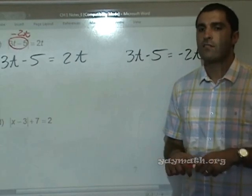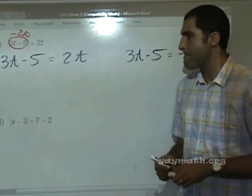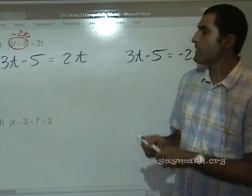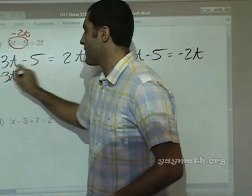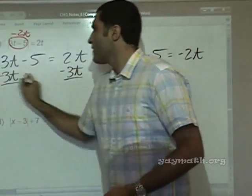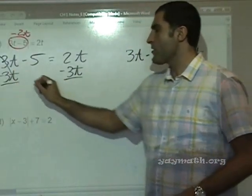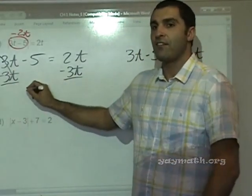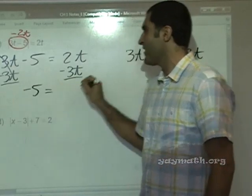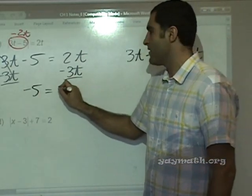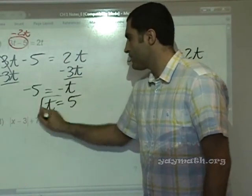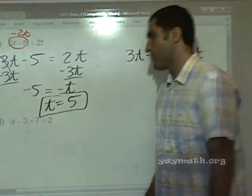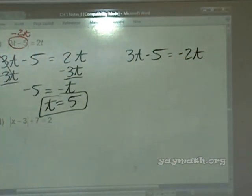Student asks: if 3t goes into 2t, wouldn't t just equal 5? Yes, you're solving now. Isolate the t's on one side: 2t minus 3t is negative t, resulting in negative 5 equals negative t, so t equals 5.